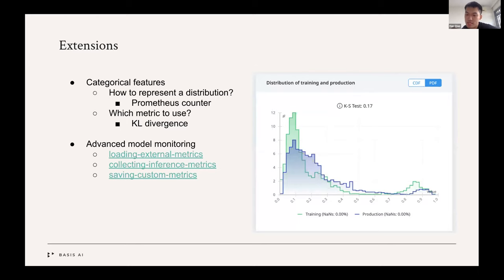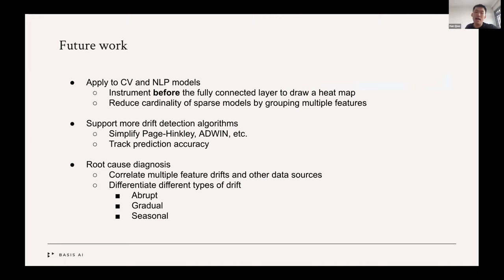So some of the future work, one is to apply model monitoring to computer vision and NLP, which are the dominant deep learning models today. It's not very trivial to do, but we have some ideas of how to proceed. So one of them is to, for a neural network, for example, we can instrument just before the fully connected layer so that we can draw a heat map of all the features. And then you can analyze how the training heat map compared to the production heat map. And for language models, the main problem here is how to reduce the cardinality of those sparse models. Because the length of a feature vector is essentially the size of a dictionary you use to train the language model. And it could be tens of thousands in length. So we want to see if we can group some of these features to reduce the storage space required.